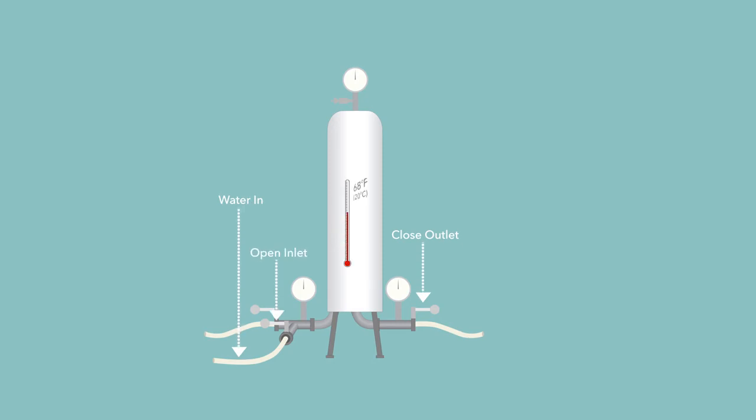Rinse with ambient water, 68 degrees Fahrenheit or 20 degrees Celsius, at 1.5 to 2 times the speed of your filtration. Over 5 minutes, increase water temperature to 140 degrees Fahrenheit or 60 degrees Celsius.